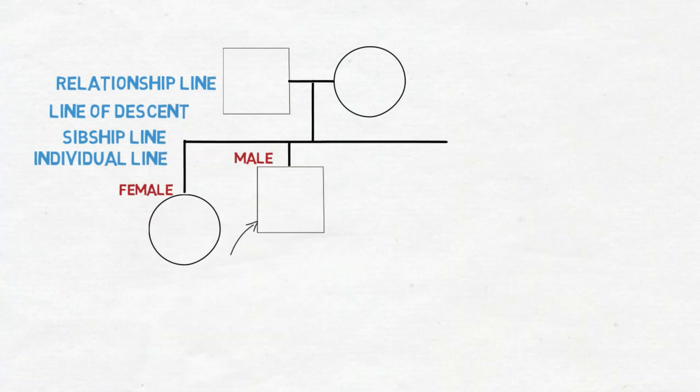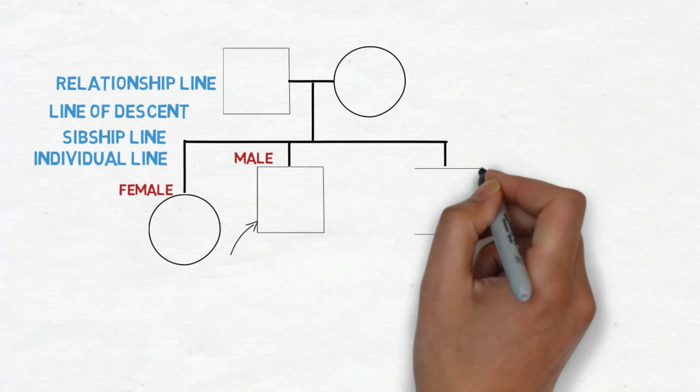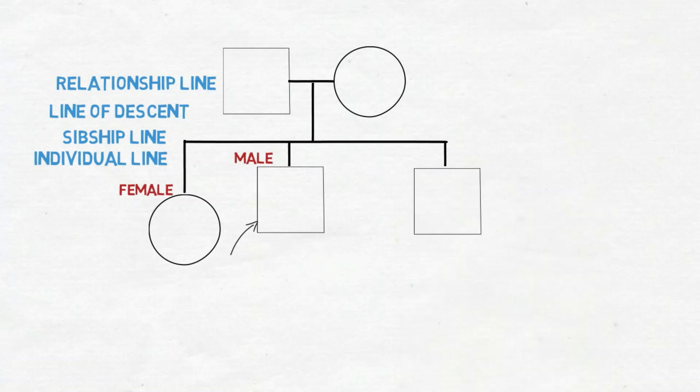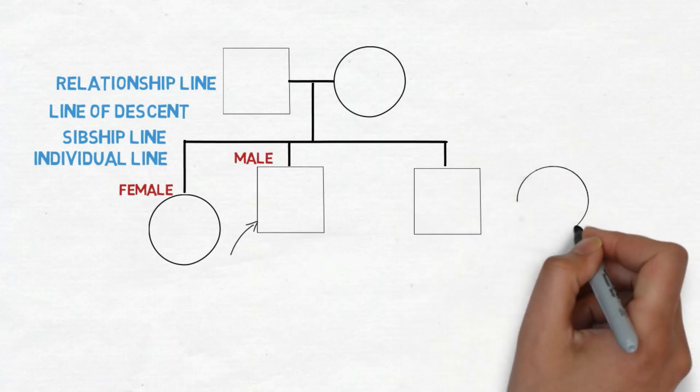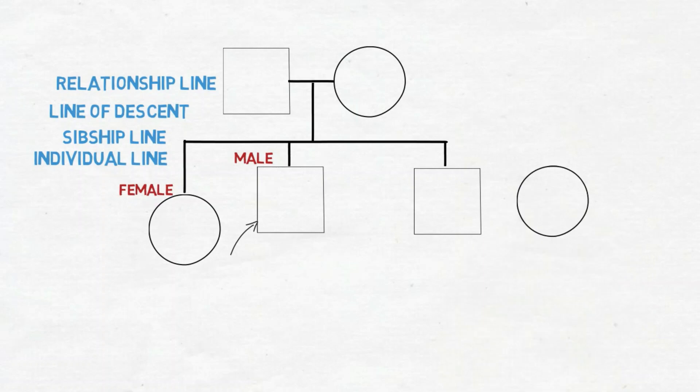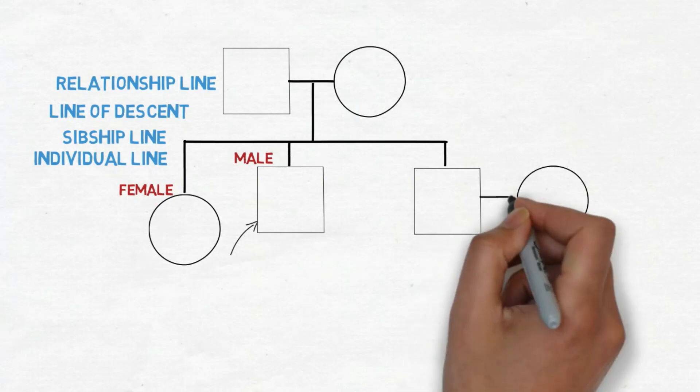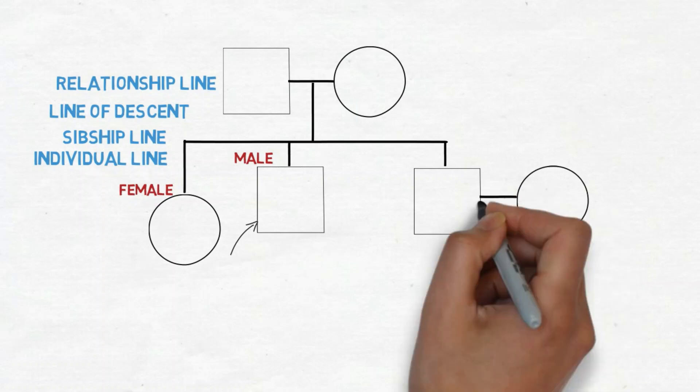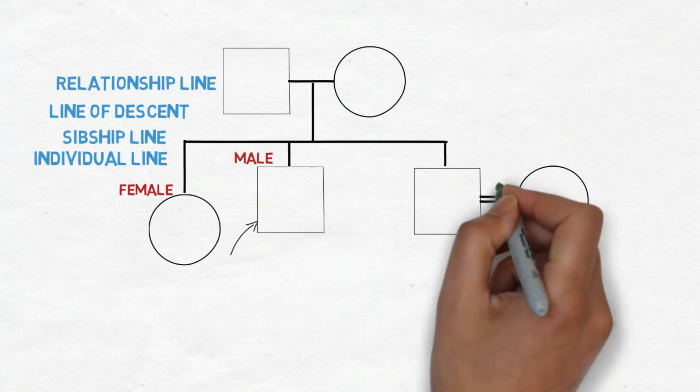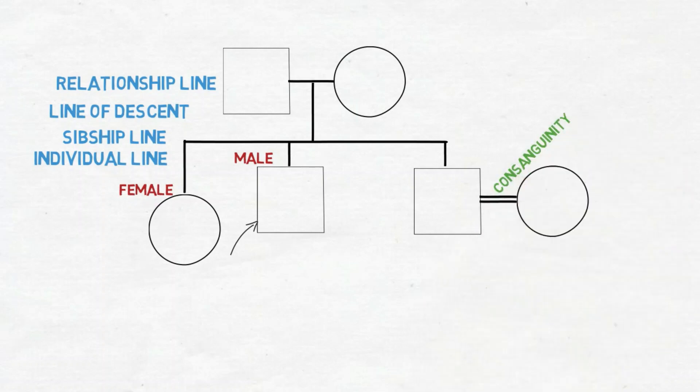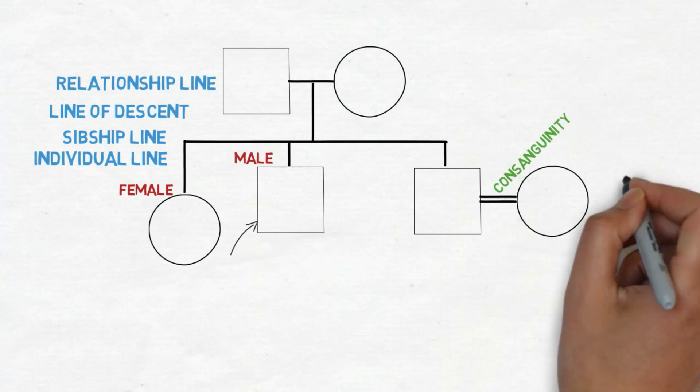So now if we draw in this individual's brother and he is married to someone who is a blood relation. So we call this consanguinity and that's represented by a double line. So instead of a single relationship line, a double relationship line. And that represents consanguinity.